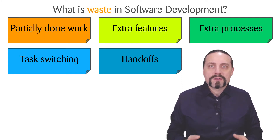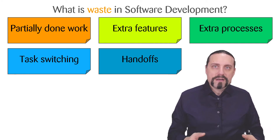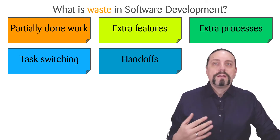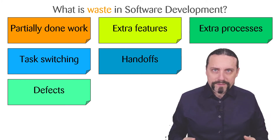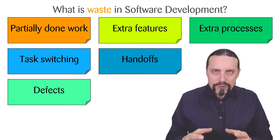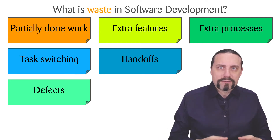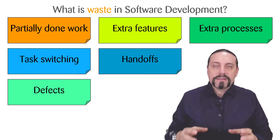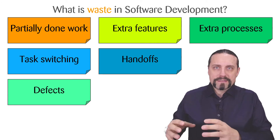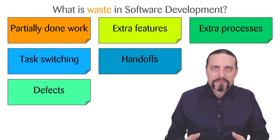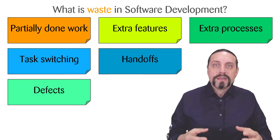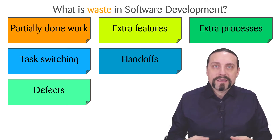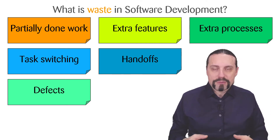The sixth type of waste is defects or bugs in our software. The problem lies not only with defects we have already identified, but also with defects that are lying hidden in our software. We should always build in quality as much as possible and eliminate defects as fast as possible.